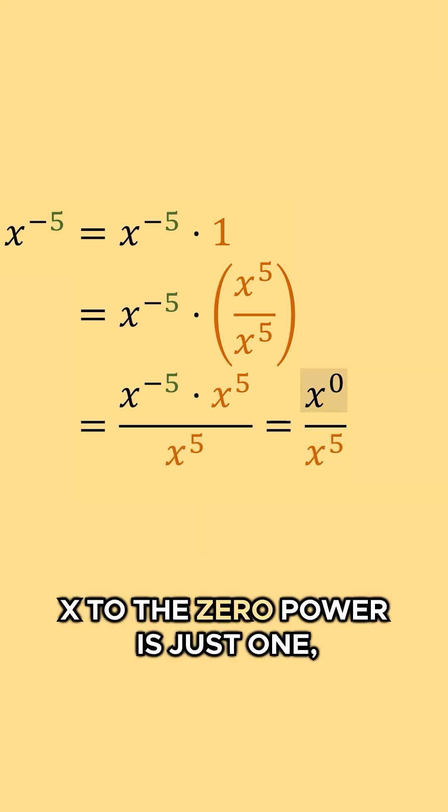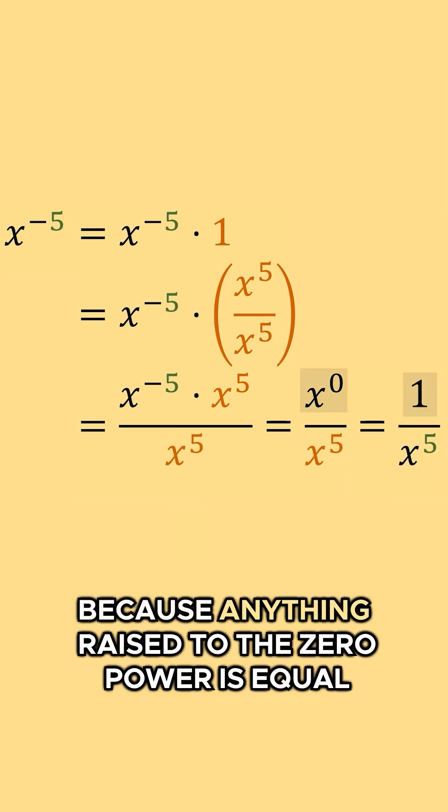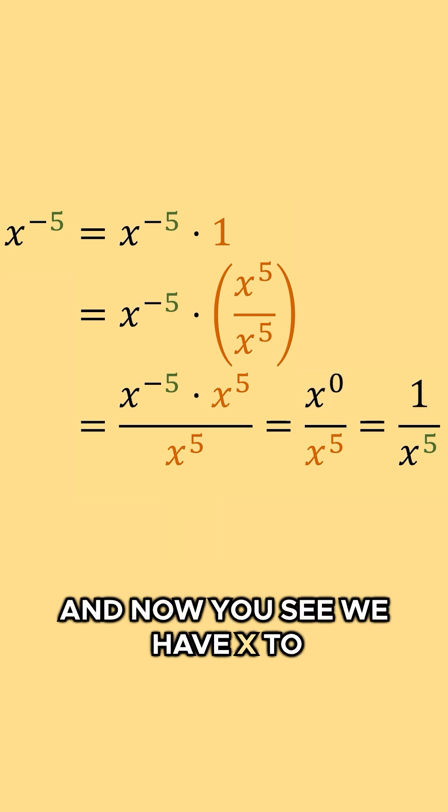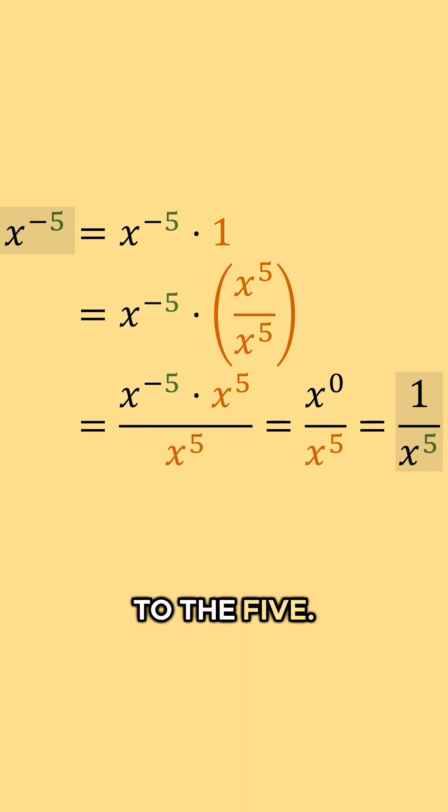Now, x to the zero power is just one because anything raised to the zero power is equal to one, and so we can replace that with one. And now you see we have x to the negative five equal to one over x to the five.